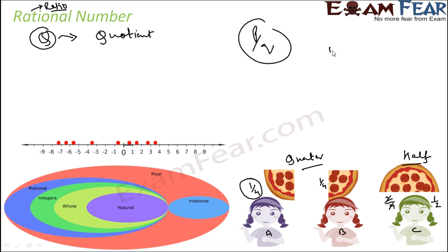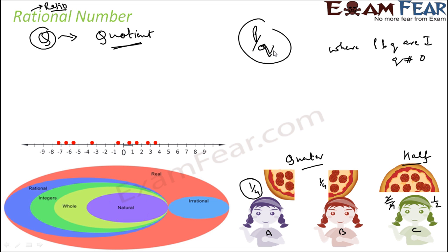Ratio means something which you can write in the form of P by Q, where P and Q are integers and Q should not be equal to 0. If you make Q equal to 0, this becomes infinite. So Q came from quotient — that is why rational numbers are denoted by Q.